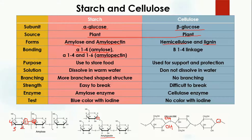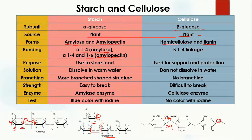In the case of amylopectin, we have both 1,4 linkage and 1,6 linkage. The 1,4 linkage is the same — between carbon one and carbon four. The 1,6 linkage means carbon one of one glucose and carbon six of another glucose molecule, so this is the 1,6 linkage.